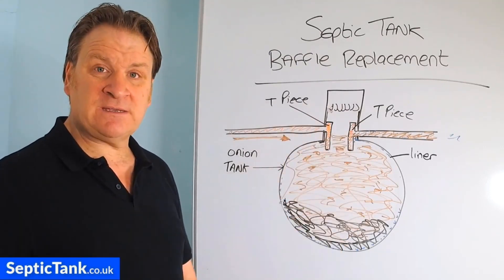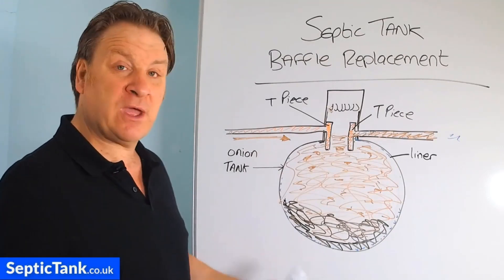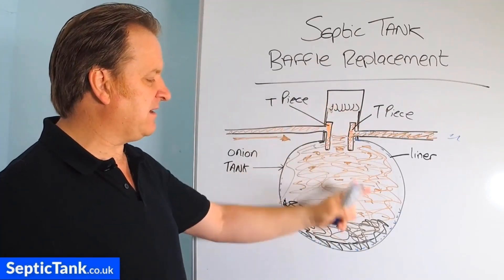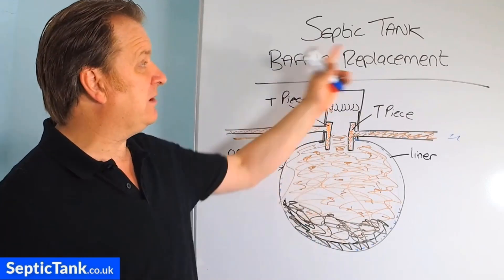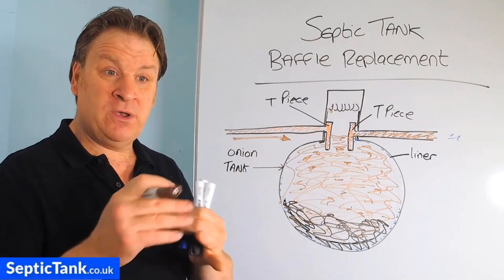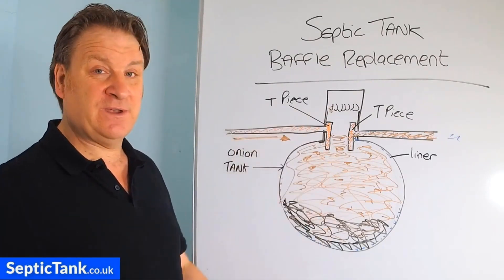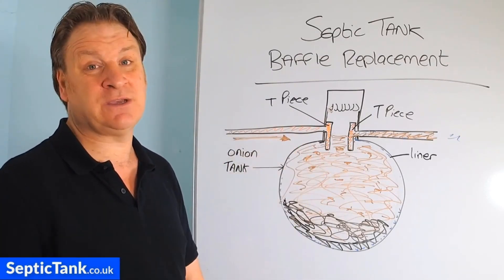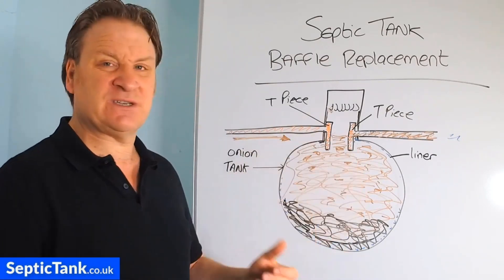The reason I've done this video is because many people, when they find their soak away is becoming blocked, or they're having to get the tank emptied all the time, or they open the lid and see just hooks hanging in the neck of the tank with the black liner fallen — they wonder what to do. So they go on Google and type in 'septic tank baffle replacement,' wondering what's happened and what the solution is. That's what's happened — and the solution is: you just have to replace your septic tank.